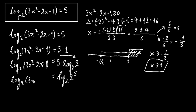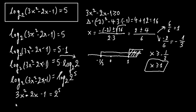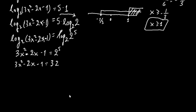Now we have log base 2 on both sides, so we can equate the inside values: 3x squared minus 2x minus 1 equals 2 to the 5th. Continuing, we have 3x squared minus 2x minus 1 equals 32, and moving 32 to the left side: 3x squared minus 2x minus 33 equals 0.